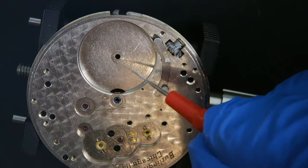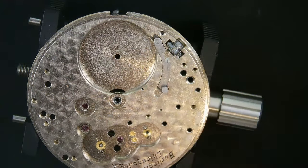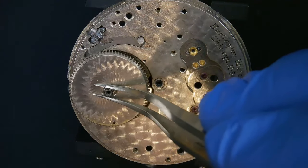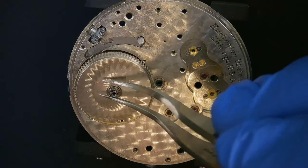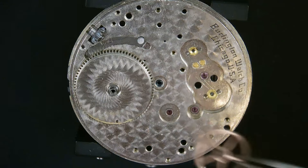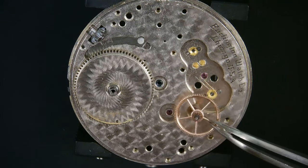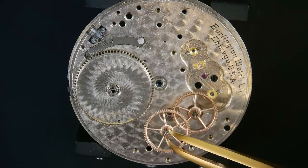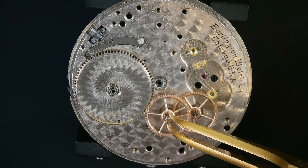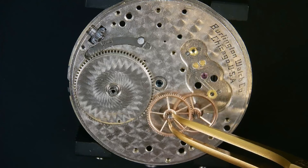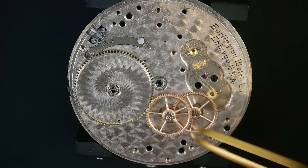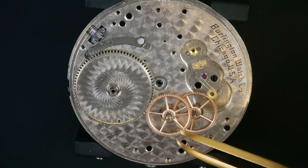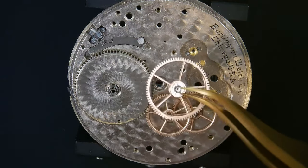We'll set the mainspring barrel in now. And the rest of the train wheels behind it. That was the fourth wheel. And now the third.